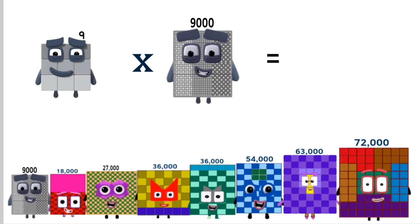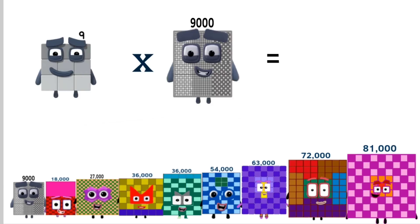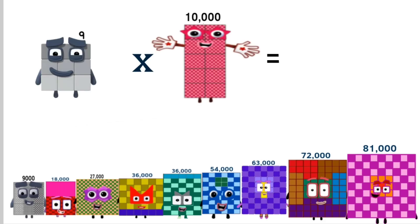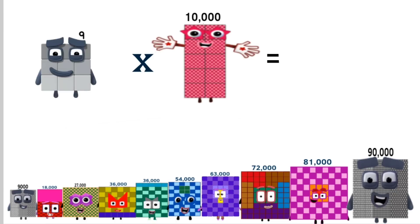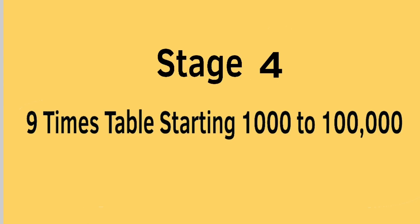Times 9,000 equals 81,000. Times 10,000 equals 90,000. Stage 3 has been completed.